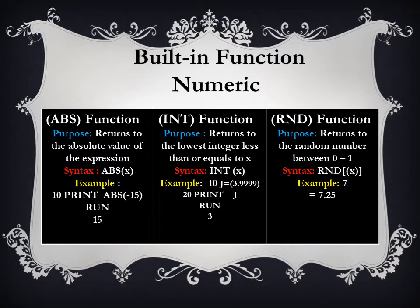The next function is the int function. The int function returns the lowest integer that is less than or equal to x, where x is our variable. Its syntax is: int(x). In the example, on line 10 we set j = 3.9999. On line 20, when we print j, the output screen does not show the decimal part 9999 — it simply shows the integer part 3 on our output screen. That was the working of the int function.